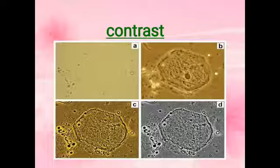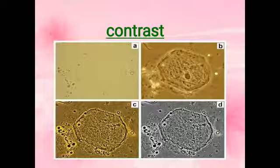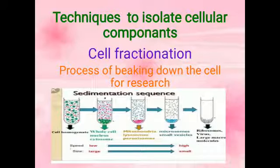Contrast is often obtained by fixing and staining the material. Nowadays, most of the subcellular structures are studied by electron microscope. This is all about microscopes. Now moving to another topic: techniques to isolate components of the cell.